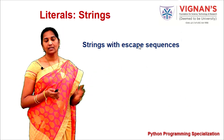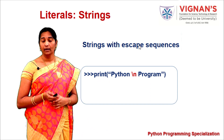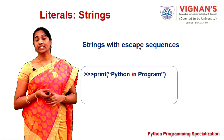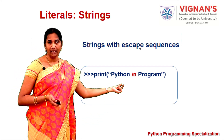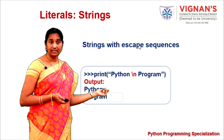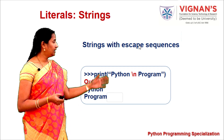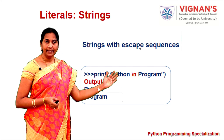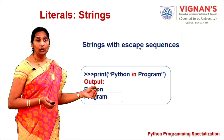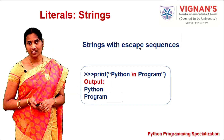Python also supports strings with escape sequences. For example, the string 'python\nprogram' contains the special symbol \n, which indicates a newline. When executed, Python displays 'python' on one line and 'program' on the next line because \n is the newline symbol.